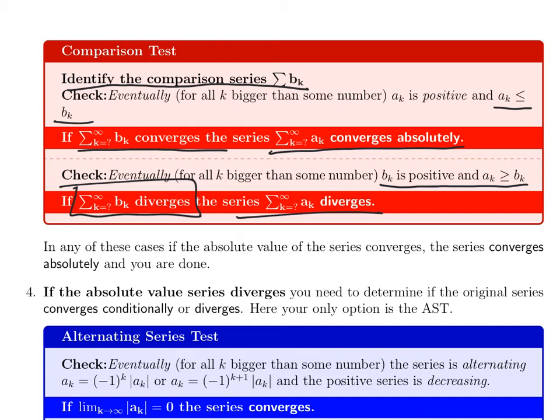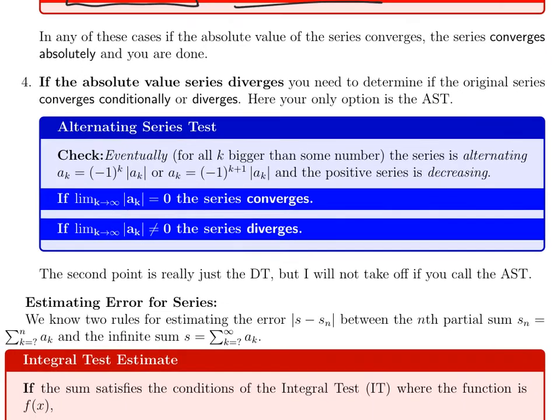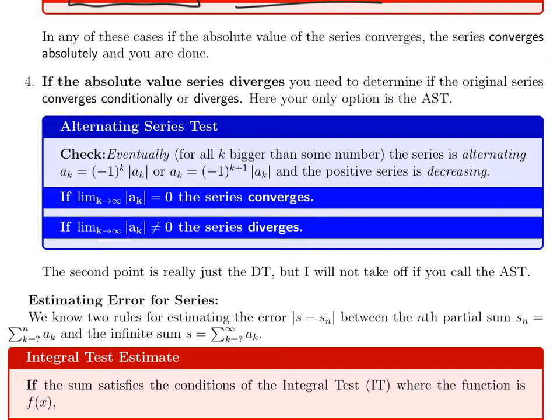On the other hand, if you manage to set it up so that b_k is smaller, eventually smaller than each term a_k, and the sum of b_k diverges, then the sum of the a_k diverges. So if you're looking at a_k, you've got to think of a bigger thing that converges or a smaller thing that diverges. That's pretty tricky. I will not generally ask you to think that up. However, I may suggest to you b_k and ask you to go through the comparison test.